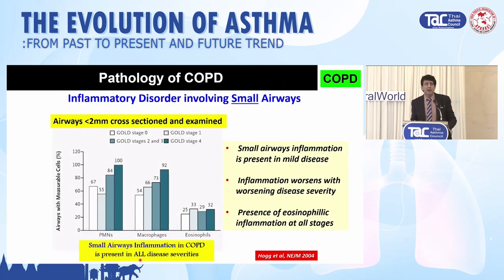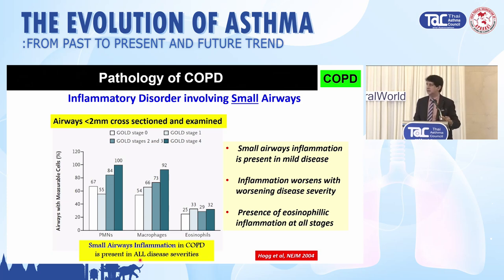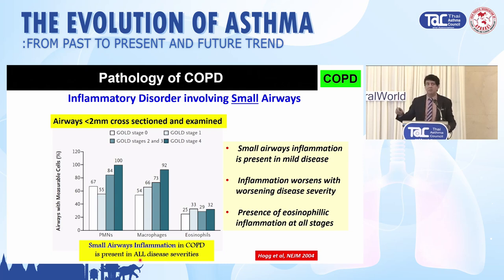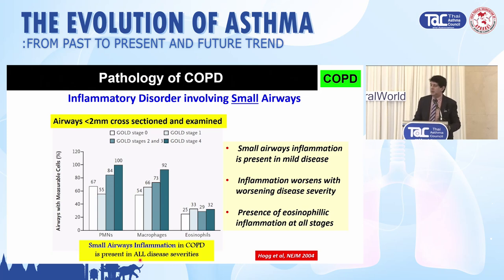Looking at the pathology from the New England Journal of Medicine paper by Jim Hogg, you can see three key things. First, small airways inflammation is present even in mild COPD. Second, this inflammation worsens from GOLD stage zero to four. Third, the presence of eosinophil inflammation is also there — which is a hot topic at the moment, eosinophils in COPD.